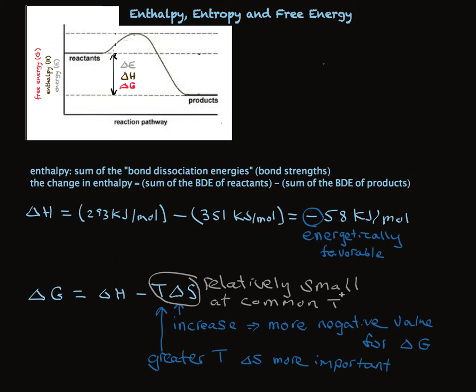So delta H is the energy term that we often use for energy diagrams like you see here. Delta G is more precise. It includes both enthalpy and entropy. And when we want to be really careful, or we're talking about really high temperatures, or we're talking about really significant changes in entropy, we'll always use free energy in these reaction diagrams.